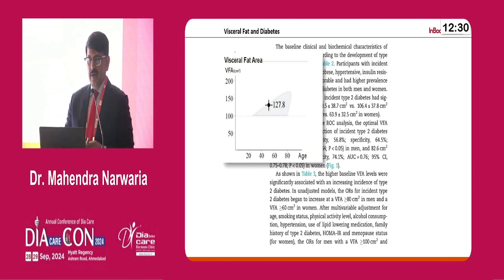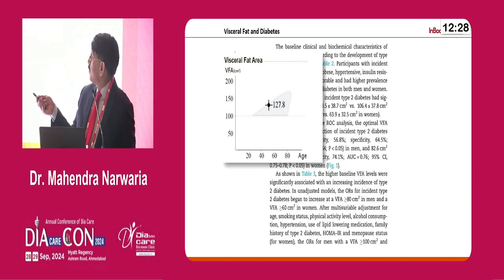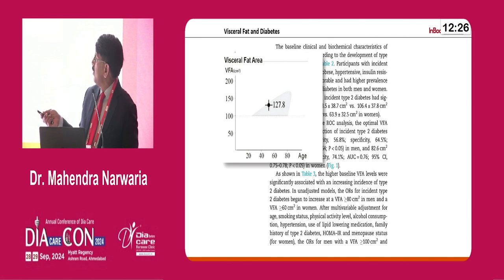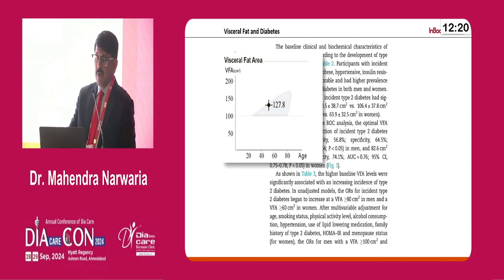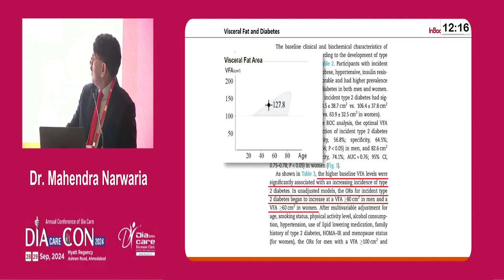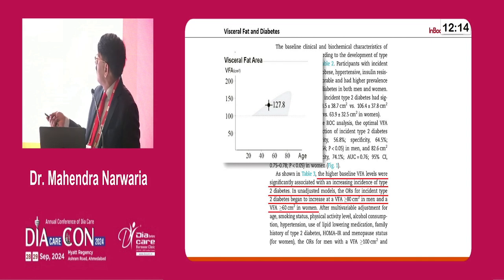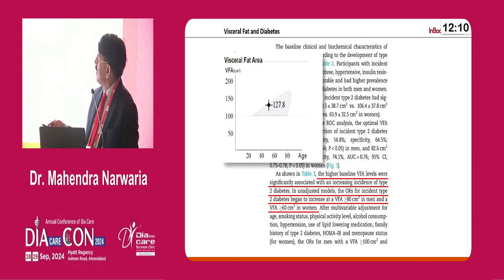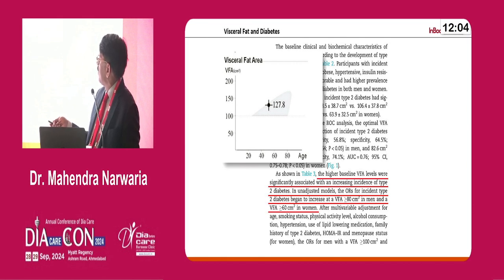When visceral fat goes beyond 80%, there is a high risk of developing more severe diabetes. High baseline visceral fat level is associated with increasing incidence of type 2 diabetes. In adjusted models, the incidence of type 2 diabetes begins increasing at visceral fat of more than 80 cm² in men and more than 60 cm² in women.